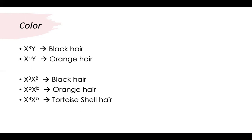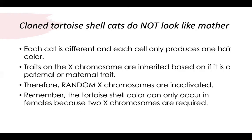It is the opposite for the female cat. In order for the female cat to have the tortoiseshell color, their genotype must be X big B, X little b. If a tortoiseshell cat is cloned, it will not look like its mother because each cat is different and only each cell produces one hair color. Traits on the X chromosome are inherited based on whether it's a maternal or paternal trait; therefore, random X chromosomes are inactivated. The cells would randomly inactivate an X chromosome, resulting in either black or orange hair. Remember, the tortoiseshell cat can only occur in females because two X chromosomes are required.